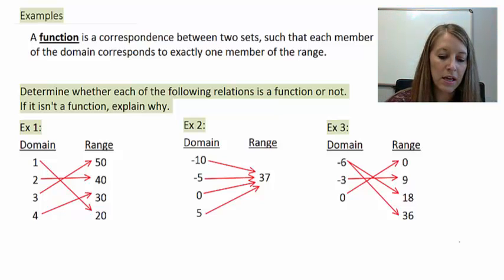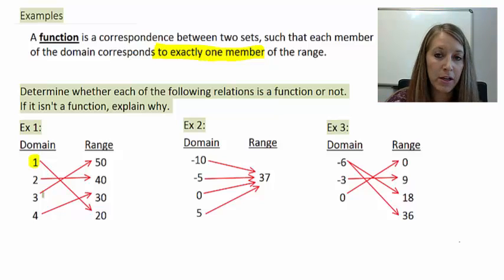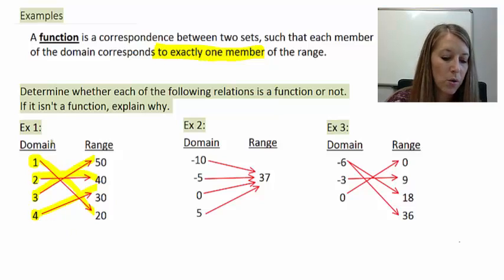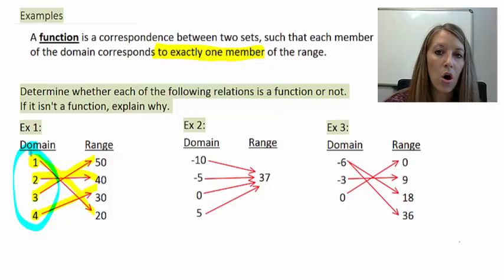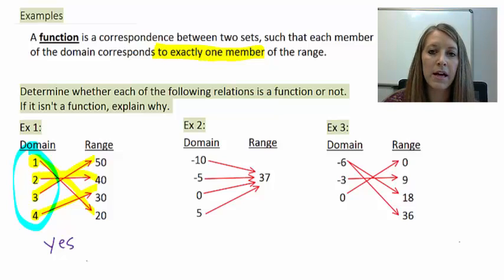The key is each member of the domain corresponds to exactly one member of the range. In example one, I take each member of my domain and see how many times it corresponds to the range. Each one corresponds once — one arrow each. So each member of my domain only has one correspondence with the range. Therefore, example one is yes, it is a function, because each value only has one correspondence.